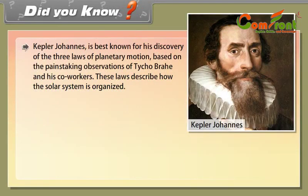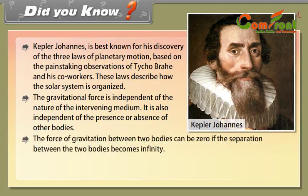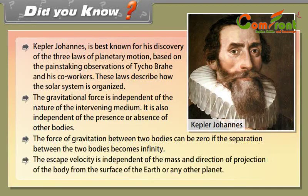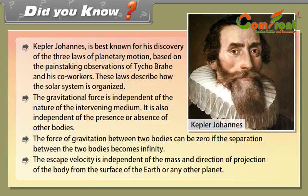Did you know? Kepler Johannes is best known for his discovery of the three laws of planetary motion based on the painstaking observations of Tycho Brahe and his co-workers. These laws describe how the solar system is organized. The gravitational force is independent of the nature of the intervening medium. It is also independent of the presence or absence of other bodies. The force of gravitation between two bodies can be zero if the separation between the two bodies becomes infinity. The escape velocity is independent of the mass and direction of projection of the body from the surface of the earth or any other planet.